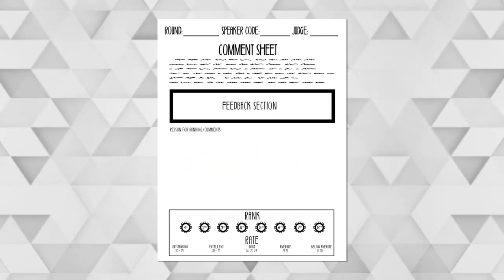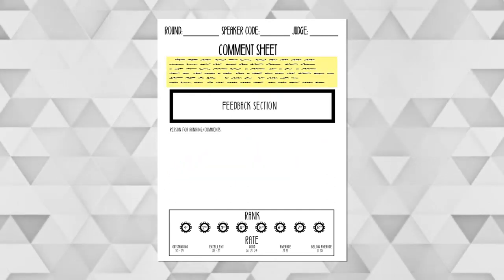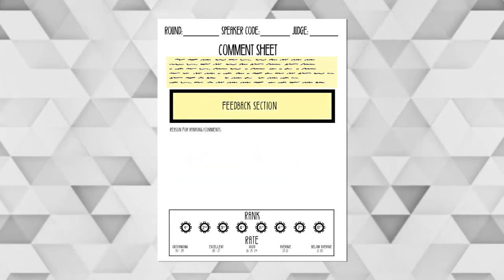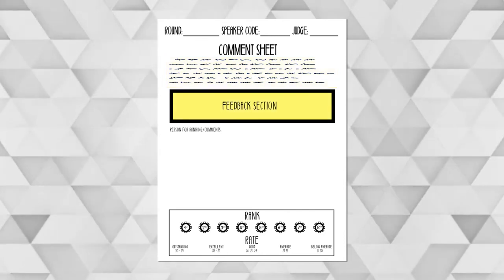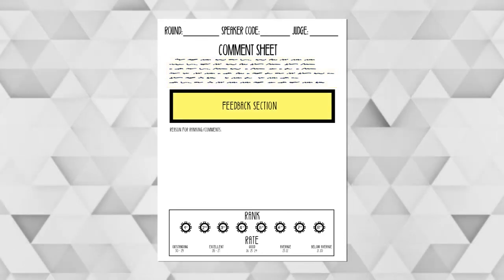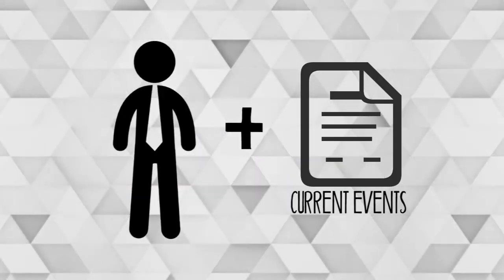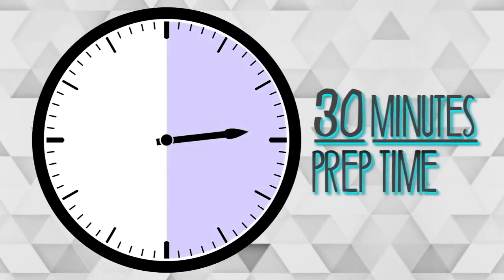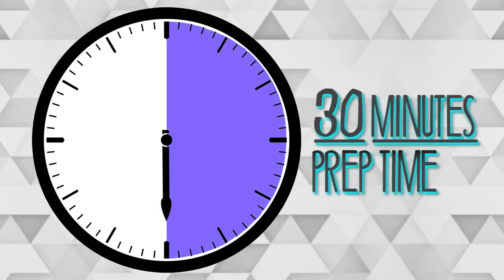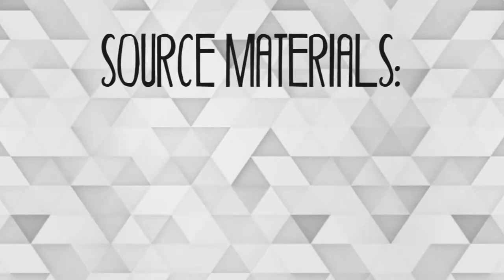On your comment sheets, you will find an overview of the events and some things to look for when judging. And now we will take you through some of the events. Extemporaneous speaking: in Extemp, contestants are given a current events question.